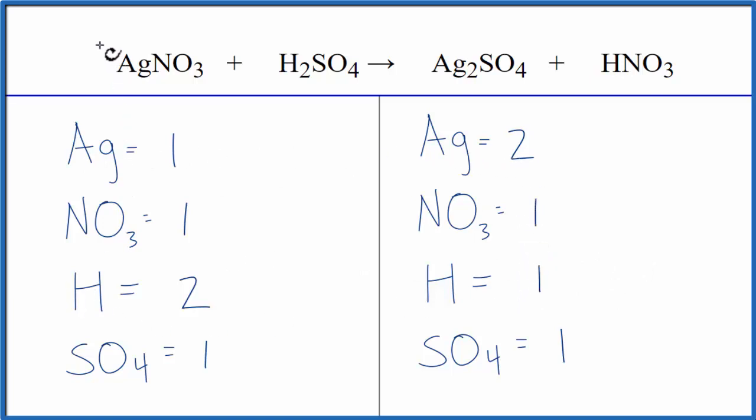Why don't we put a 2, a coefficient of 2 in front of the AgNO3. That should balance the silvers. One times two, that gives us two silvers, those are balanced.